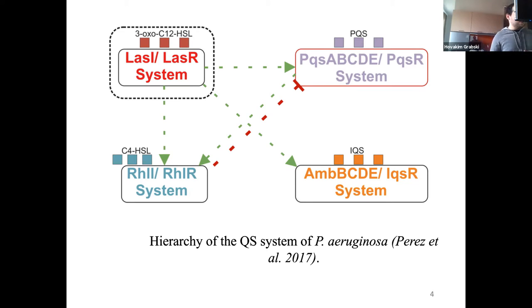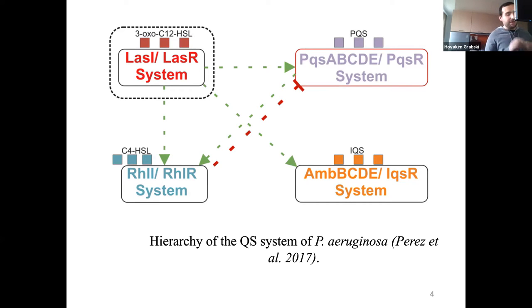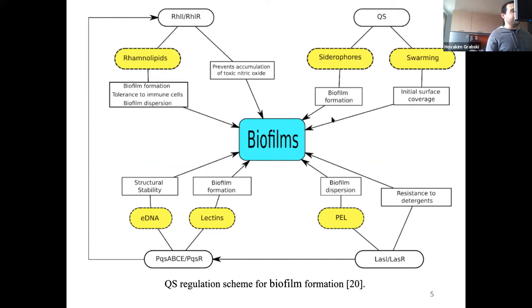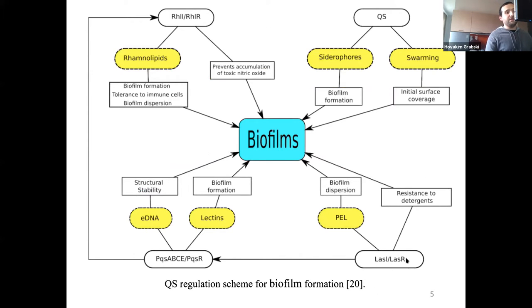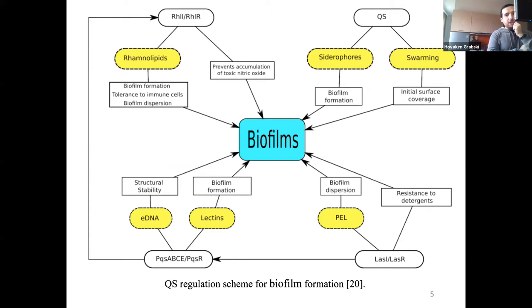Inhibiting LasR also makes antibiotics more effective by decreasing the bacteria's resistance mechanisms. All of the systems lead to biofilm synthesis. Targeting the LasR system definitively addresses this. By targeting the quorum sensing system, we can also affect the biofilm structure so that bacteria return to the planktonic state, where they are much more susceptible to antibiotics.